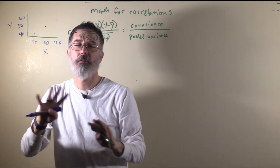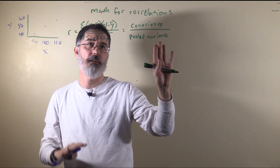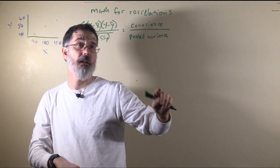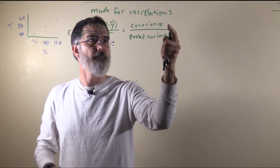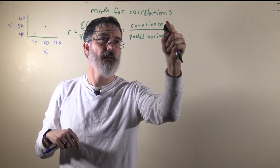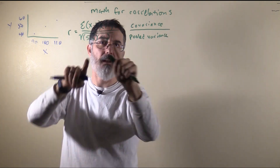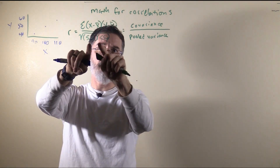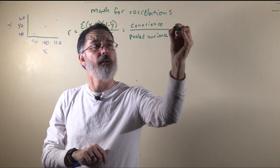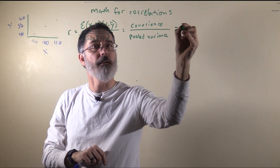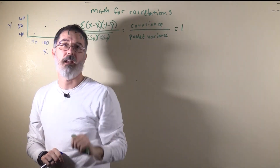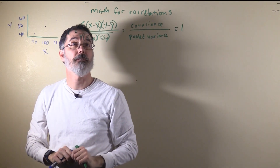Remember, these correlation coefficients go from 1 to negative 1 — those are the only possible values. If the two variables co-vary the exact same amount as the pooled variance, you will get a correlation coefficient equal to 1. That is what we are actually going to have here for this first example.